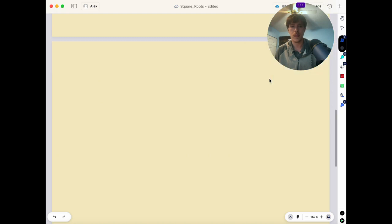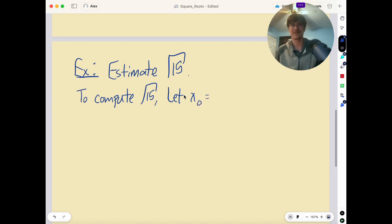Now, let's do a quick example before I move over to the spreadsheets. Example: estimate the square root of 15. To compute the square root of 15 and to do what your calculators do, we have to have an initial guess. What do you think our initial guess should probably be? It's going to be close to the square root of 16, which is about 4. Let x naught equal 4.